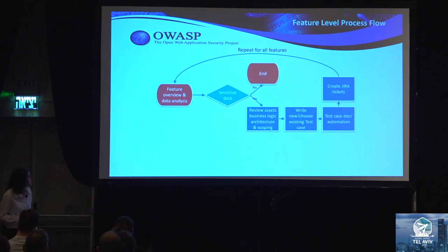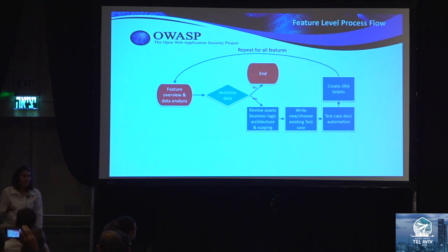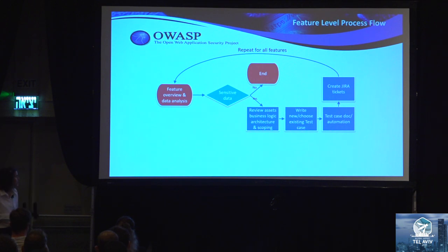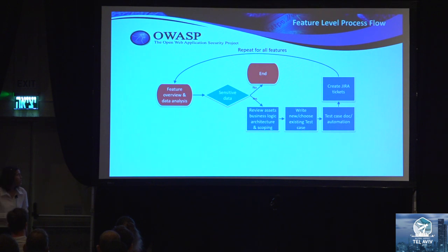This is the feature-level process. It's quicker than the system-level process because it's done only on the features in scope in the specific sprint. For every feature, the application security person does a feature review with the specific feature developer — overviewing the functionality and the data. If sensitive data or functionality is involved, the process continues with asset and business logic analysis. Based on that, the application security person and the QA fill up a form that analyzes the use case and writes the specific steps to test. The next step — the QA performs automatic testing and opens the Jira ticket.